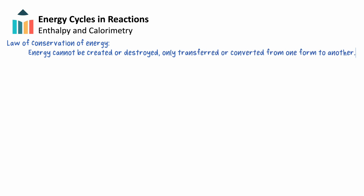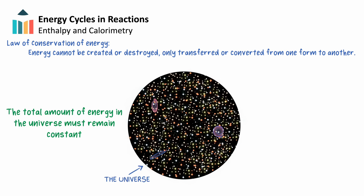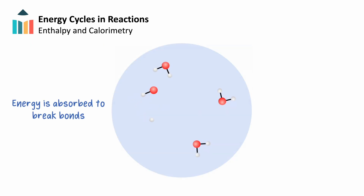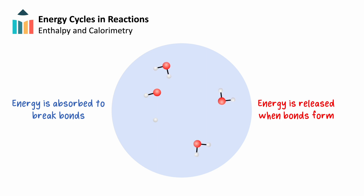The law of conservation of energy states that energy cannot be created or destroyed, only transferred or converted from one form to another. This means the total amount of energy in our universe must remain constant. In a chemical reaction, the total energy before and after must remain the same in a closed system. When bonds break, energy is absorbed from the surroundings to overcome the attractive forces holding atoms together. When new bonds form, energy is released as atoms stabilize to a lower energy state, and this energy is transferred back to the surroundings.